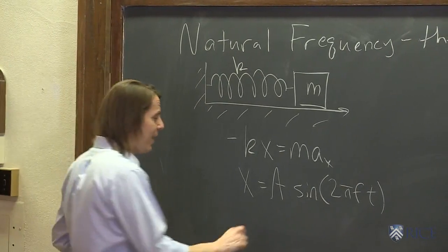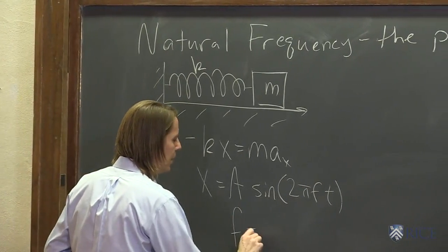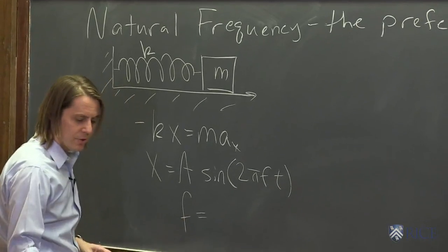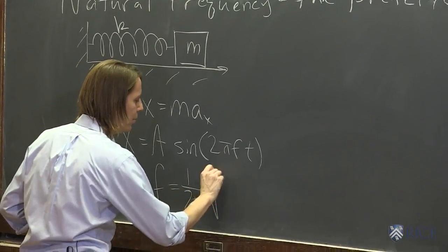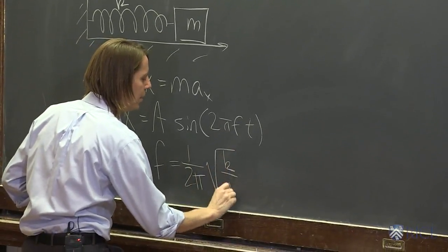So now what I'm going to tell you is f, it turns out, in this case, is 1 over 2π times the square root of k over m.